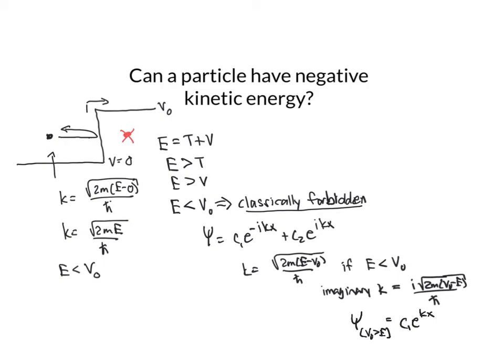I have c₁e^(kx), not imaginary, plus c₂e^(-kx). And so I have a wave function that is a valid wave function that exists in the region where classically the particle could never be.